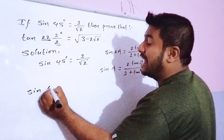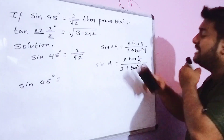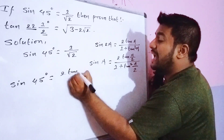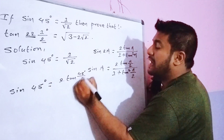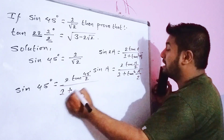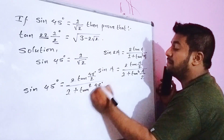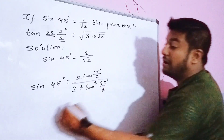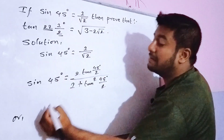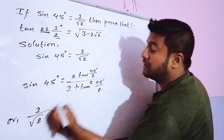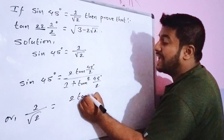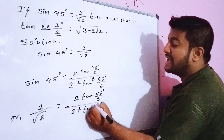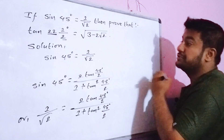Applying this to sin 45 degree: sin 45 degree equals 2 tan(45/2) whole divided by 1 plus tan square(45/2). We know the value of sin 45 degree is 1 by root under 2. So 1 by root under 2 equals 2 tan(45/2) divided by 1 plus tan square(45/2).